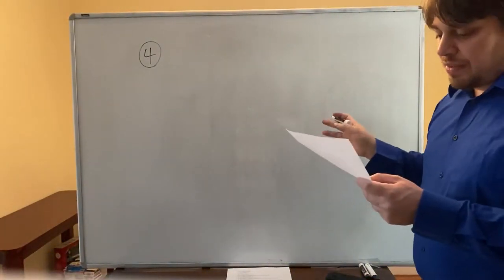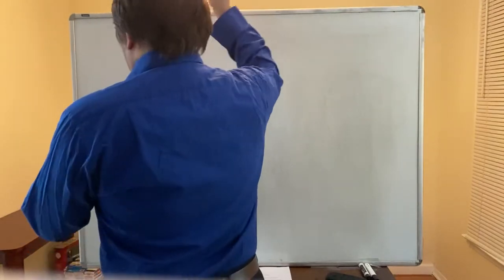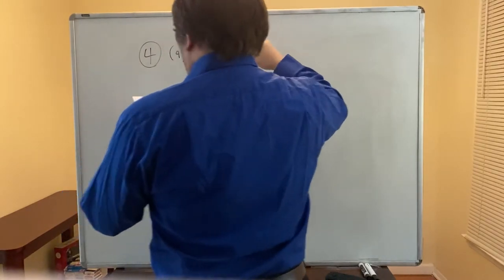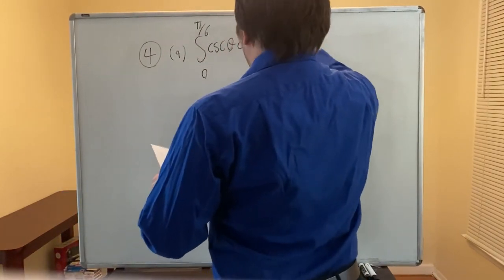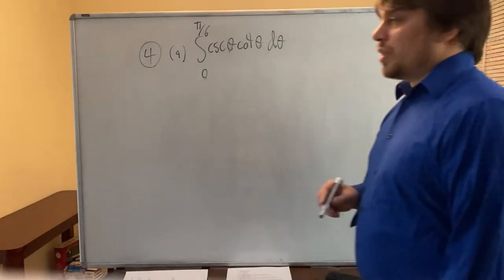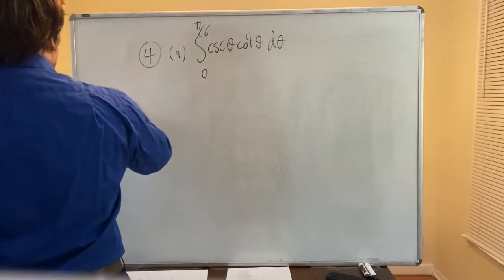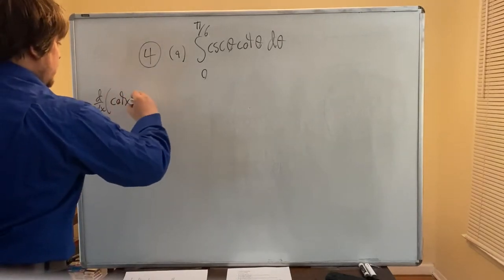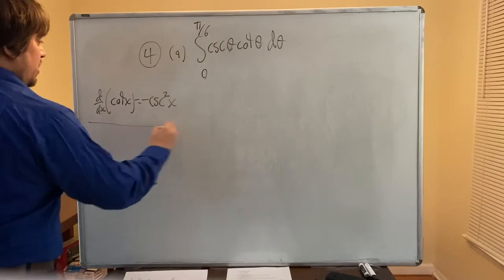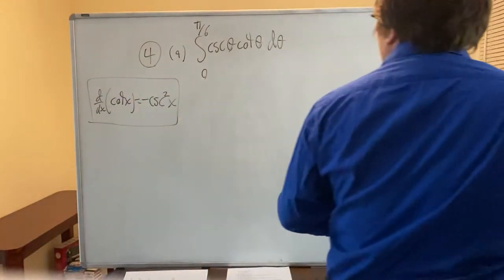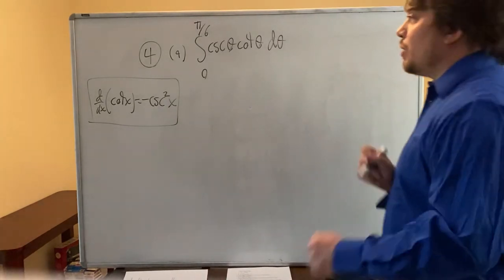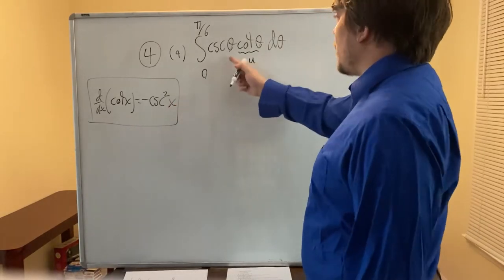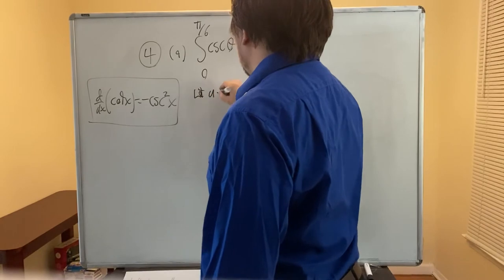Number four: evaluate the indefinite or definite integral. For part a: the definite integral from 0 to π/6 of csc θ · cot θ dθ. We use the fact that d/dx[csc x] = −csc x · cot x, which means d/dx[−csc x] = csc x · cot x. So the antiderivative of csc θ · cot θ is −csc θ.